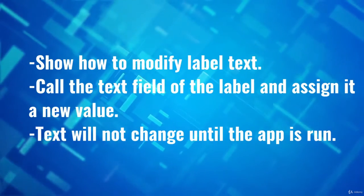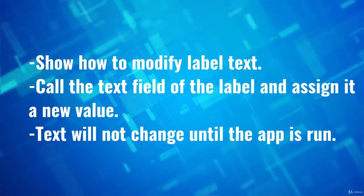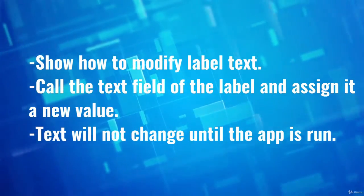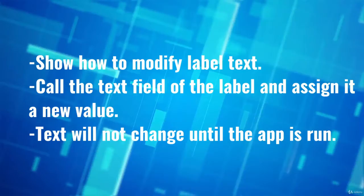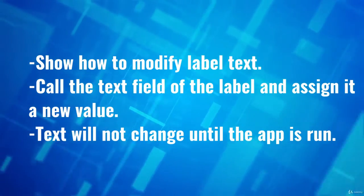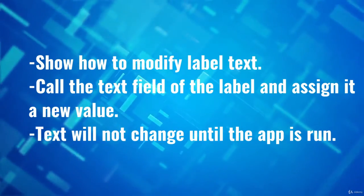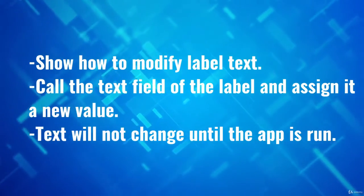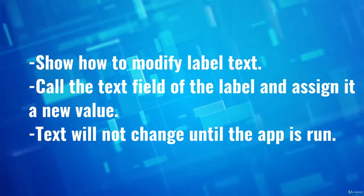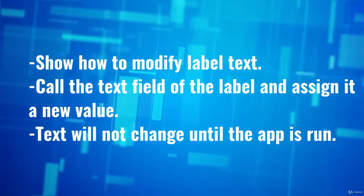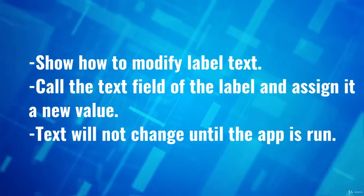Now we're going to show you how to modify the label text itself using code rather than the attributes window. We're going to call the text field off the label and assign it a new value, so we'll go lbl_label.text and then assign a new value. Be careful - we can only pass in strings.